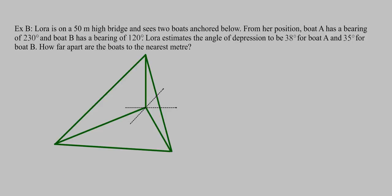Here, Laura is on a 50-meter high bridge and she sees two boats anchored below. From her position, boat A has a bearing of 230 degrees and boat B has a bearing of 120 degrees. Laura estimates the angle of depression to be 38 degrees for boat A and 35 for boat B. How far apart are the boats to the nearest meter?